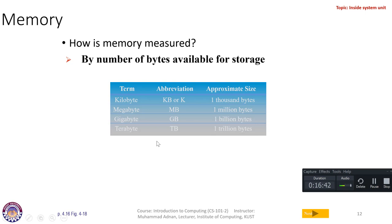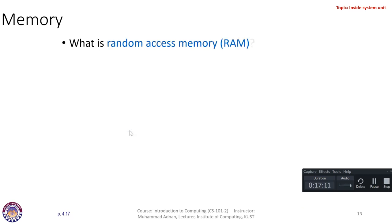I recommend buying a computer with at least one terabyte of hard disk, and it should be an SSD (solid state drive). I also recommend students buy a minimum of 8 gigabytes of RAM. These are very essential — otherwise your computer will cause many problems, hang frequently, and keep you in a waiting state, which is very frustrating.